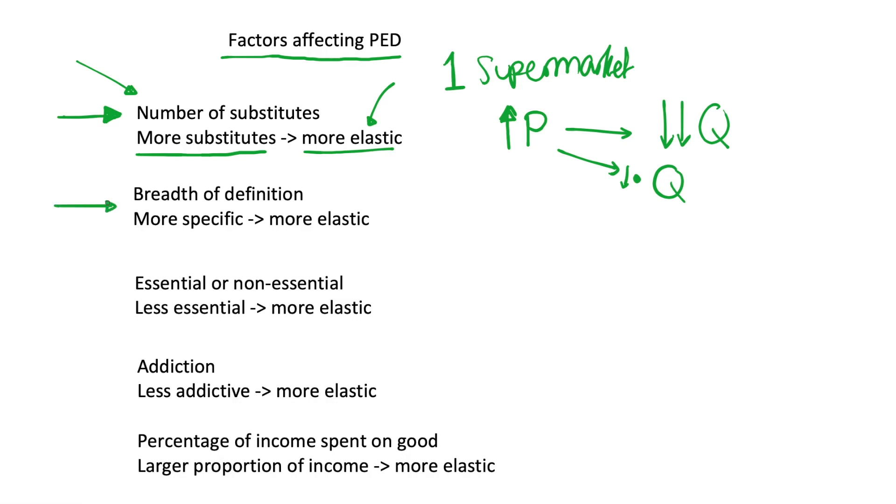Another factor is the breadth of definition of a good or service. And this is just basically how we're defining our good or service. So an example that's often used is one for food. So if we just think of a category as food, and this is just our good or service, this is obviously going to be very inelastic because if the price of just food, if every piece of food increases in price,